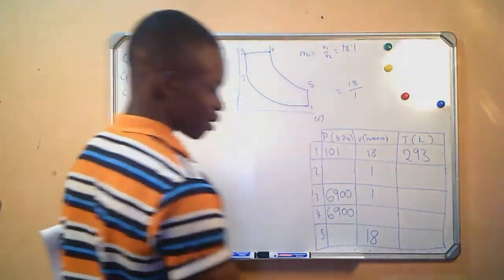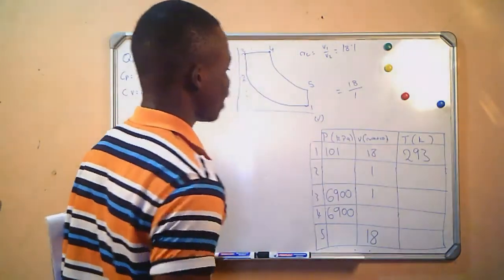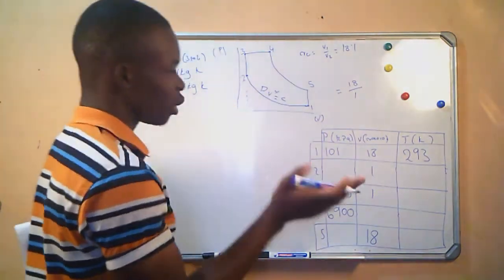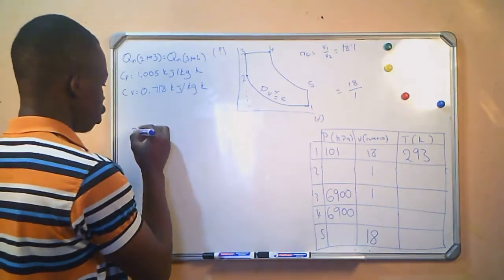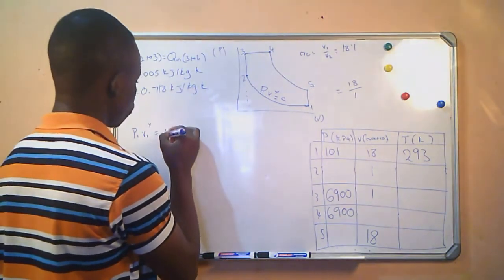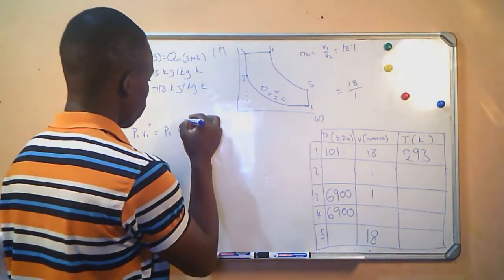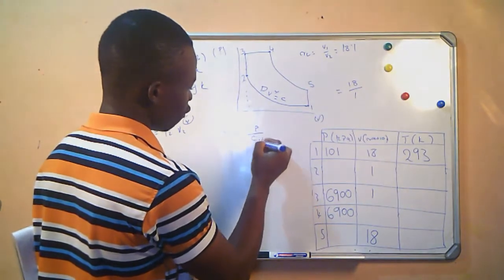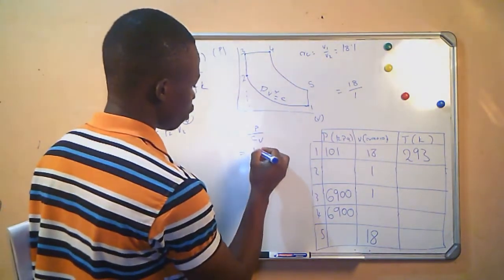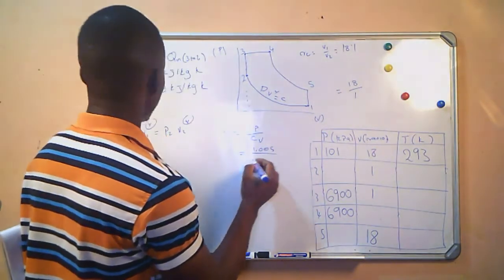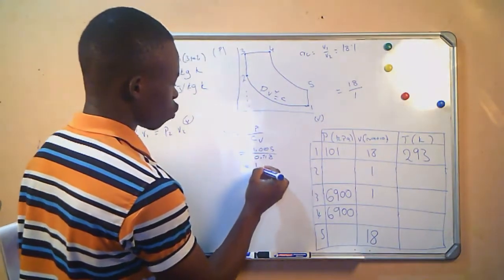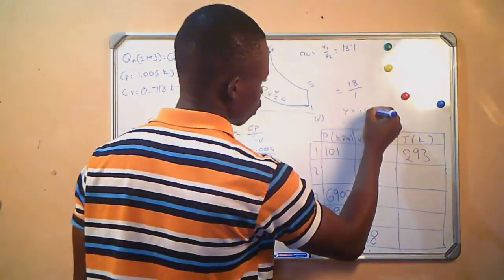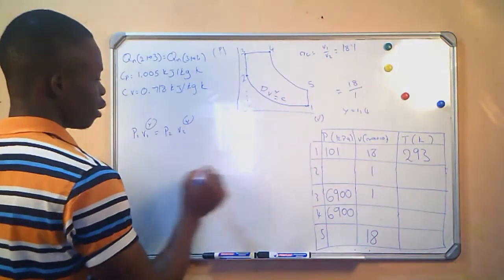We start with columns 1 and 2, working through the adiabatic process. We need gamma, which equals cp divided by cv: 1.005 divided by 0.718, giving us gamma equals 1.4.